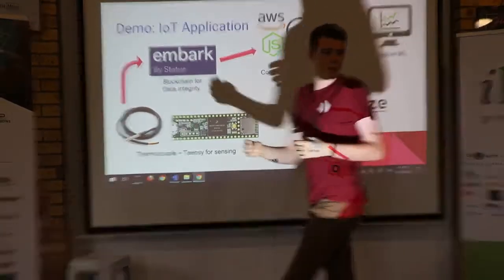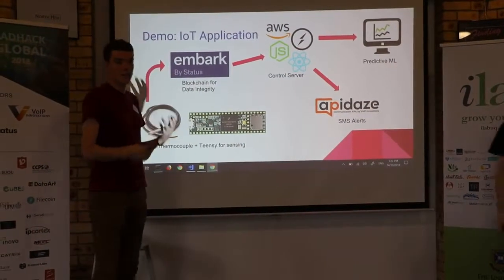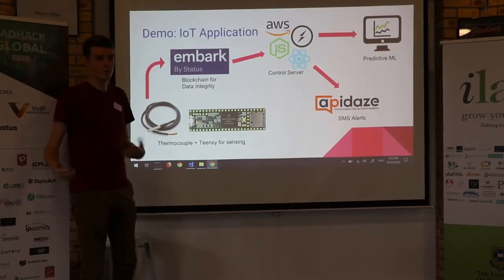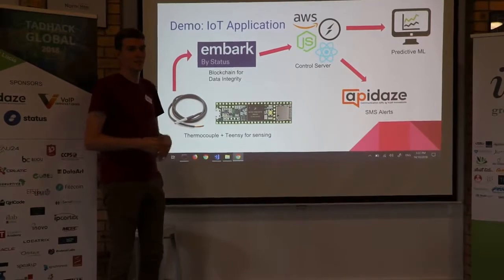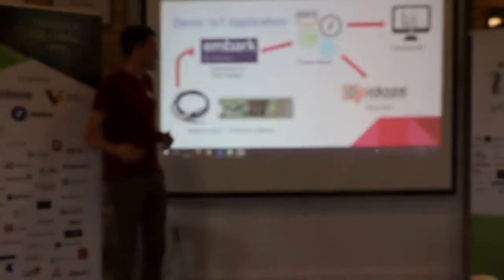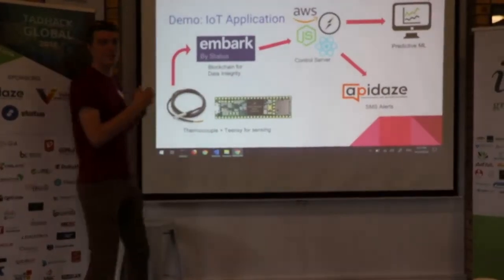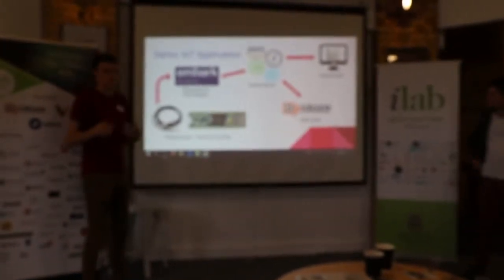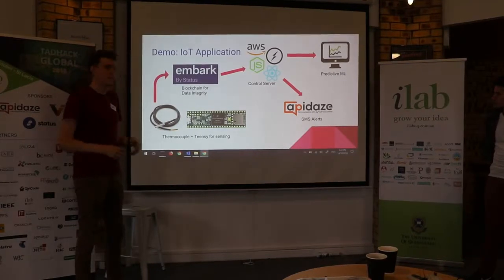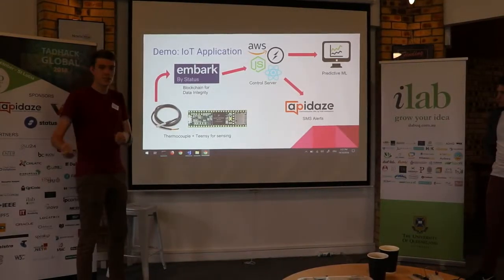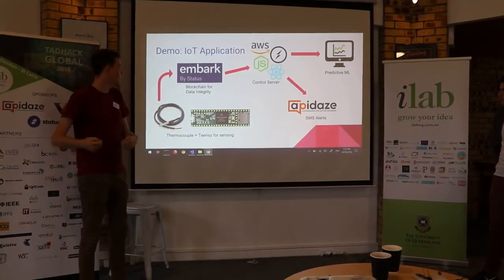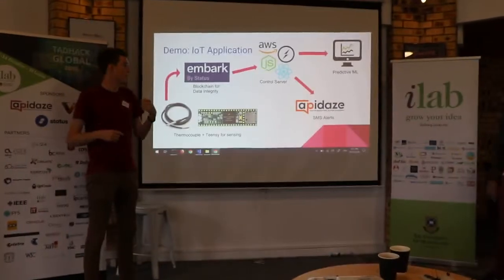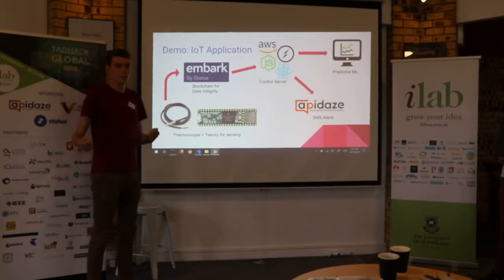The idea for this system we built — tying the hardware side of things together with the sponsor's application — came from originally wanting to build a Rube Goldberg machine: doing something simple through a really long and convoluted process. Originally we had all these components together in a slightly different order, but then we realized with a bit of rearranging we could make something actually useful. Essentially, this is a demo of taking some data from hardware, writing it onto a blockchain, and then displaying that on the front end, as well as sending SMS alerts.